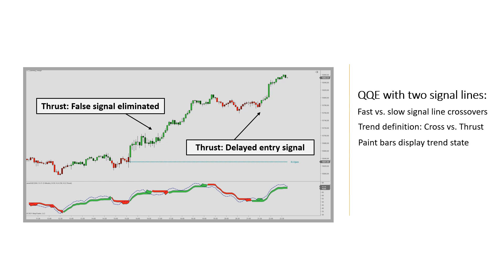You can revert to the original version of the QQE with only one signal line. To do that, you just set the fast multiplier value to zero, and then the fast signal line becomes identical to the RSI, as we saw previously.